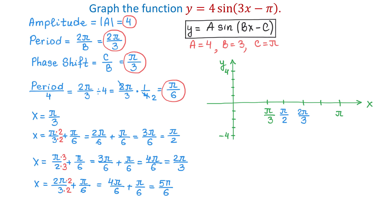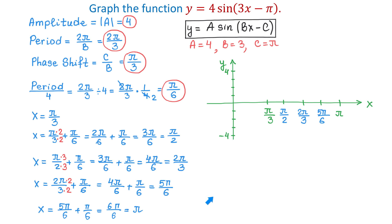The fourth point on the x-axis has coordinate 5 pi over 6. Adding another quarter period: 5 pi over 6 plus pi over 6 equals 6 pi over 6, which is just pi. And indeed the last point is pi.